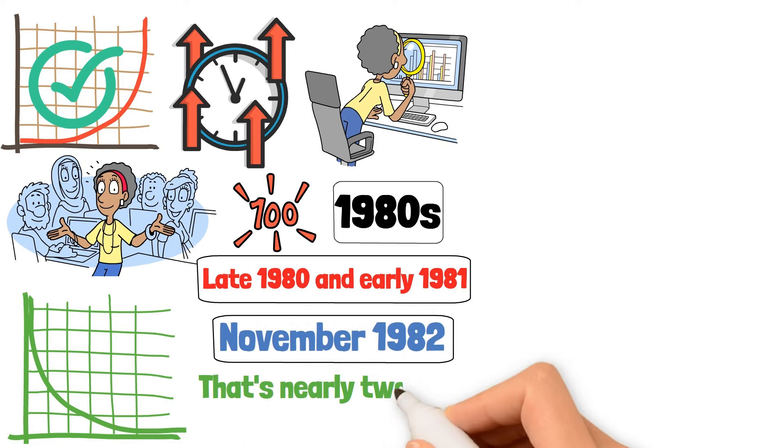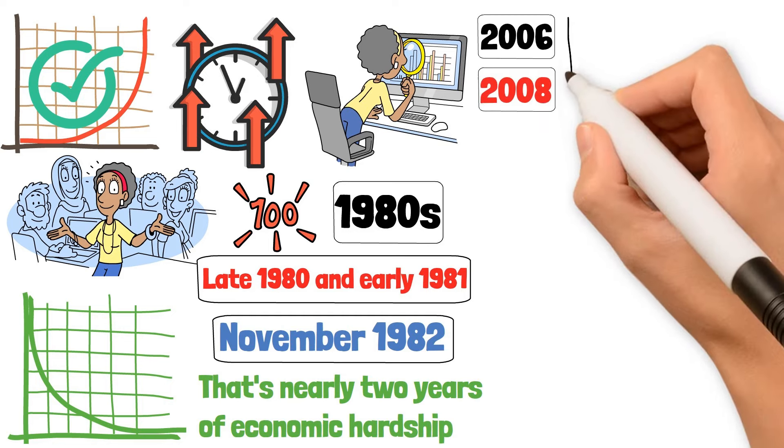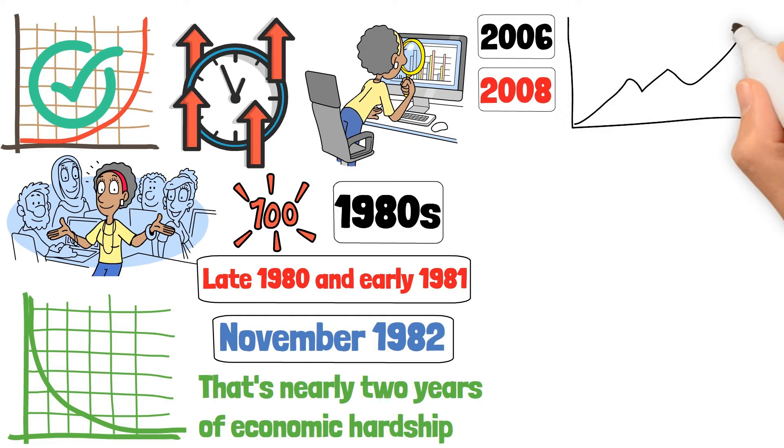Fast forward to 2006, right before the 2008 financial crisis. And yeah, the yield curve inverted, and what followed was the worst recession since the Great Depression. The curve stayed inverted for over a year, signaling long-term trouble.